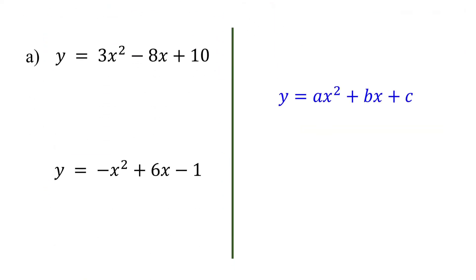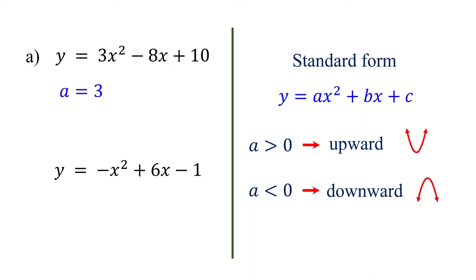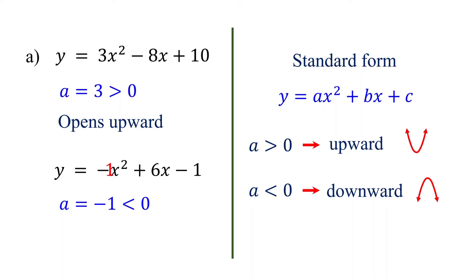When a quadratic function is given in standard form, if a is greater than 0, the parabola opens upward. If a is less than 0, the parabola opens downward. For the first function, a is 3, which is greater than 0, so the parabola opens upward. For the second function, a is negative 1, which is less than 0, so the parabola opens downward.